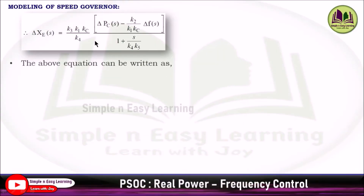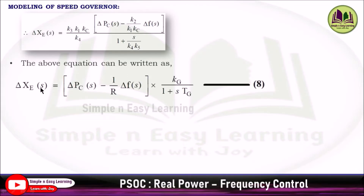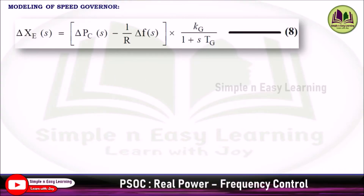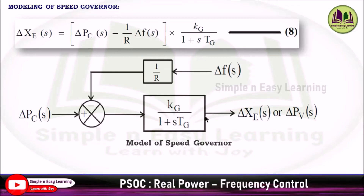The above equation can be written as: del_Xc(s) = [del_Pc(s) − (1/R)·del_f(s)] × Kg / (1 + s·Tg). This is Equation 8, where R = K1·Kc/K2 is the speed regulation of the governor, Kg = K1·K3·Kc/K4 is the gain of the speed governor, and Tg = 1/(K4·K5) is the time constant of the speed governor.